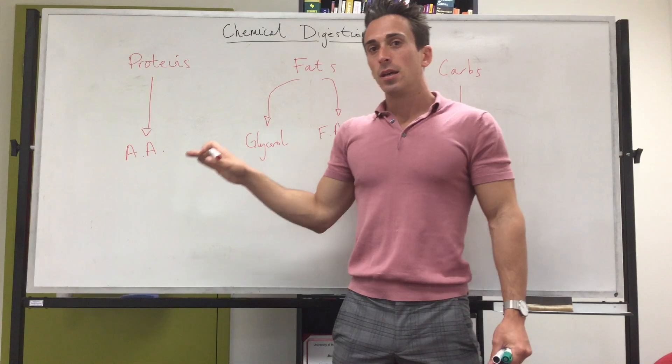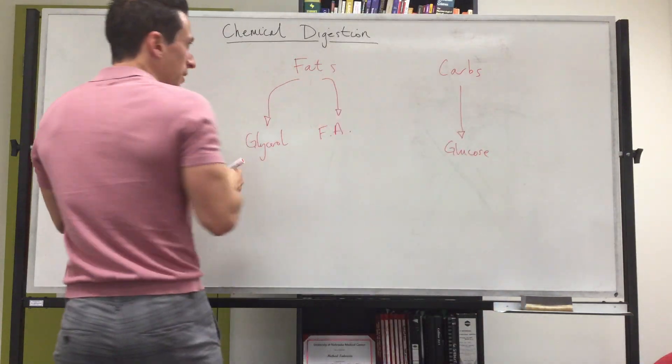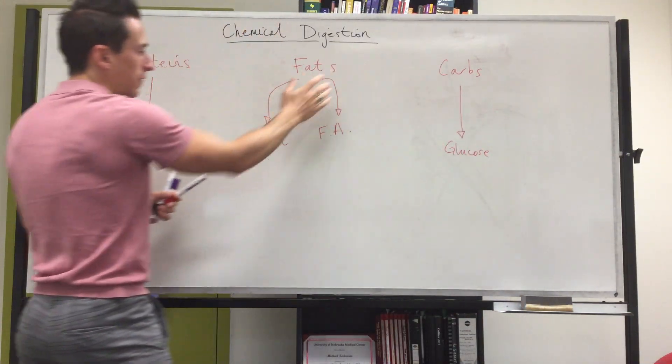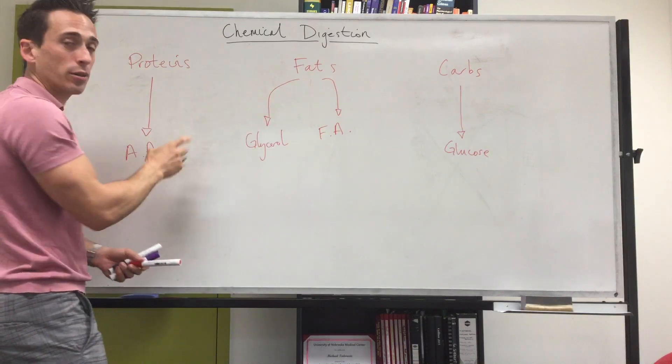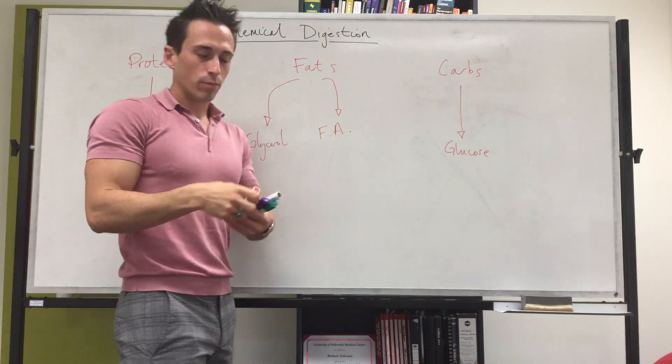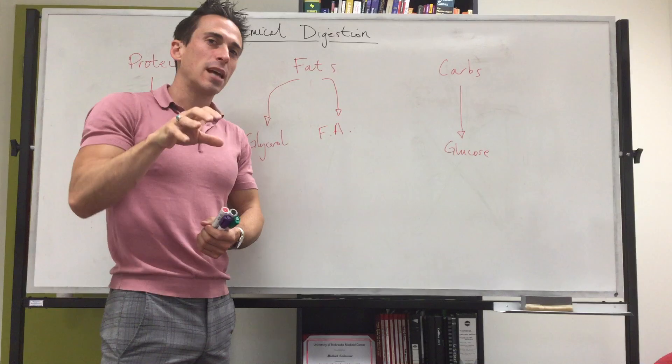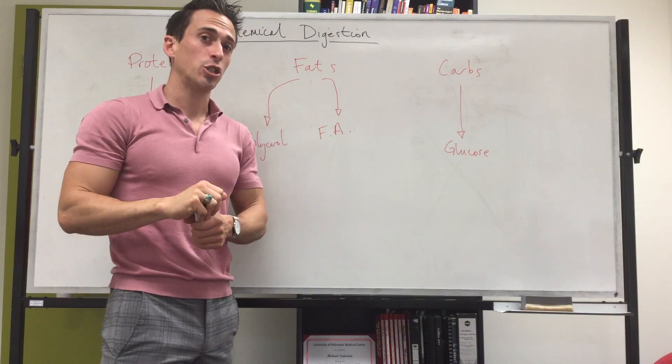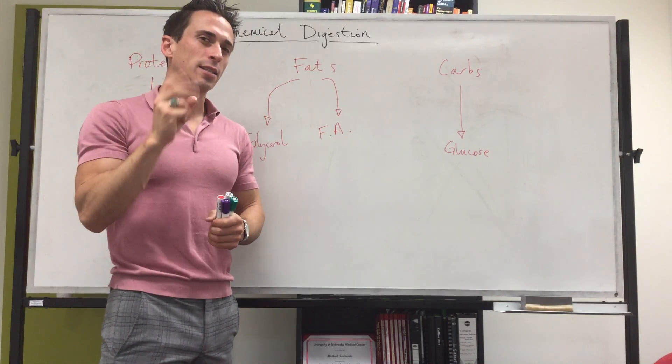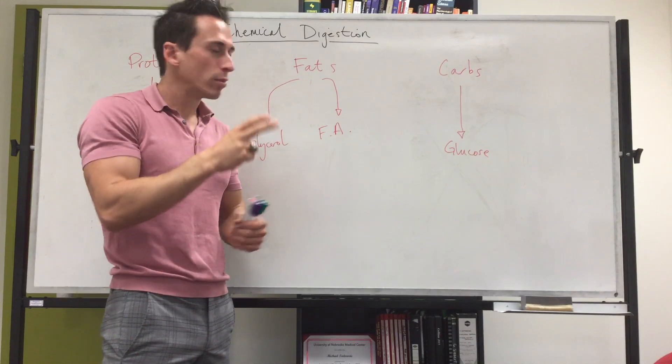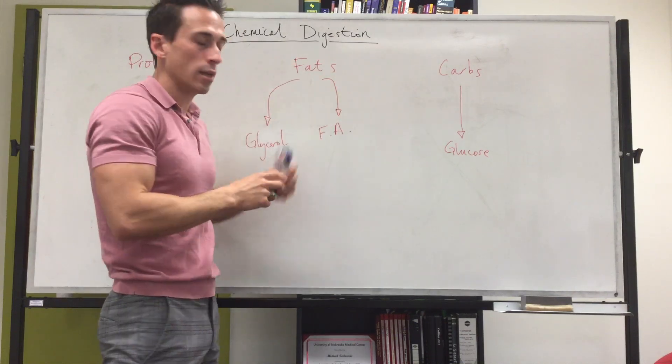Now the question is: how do we go from carbs to glucose, fats to glycerol and fatty acids, and proteins to amino acids? Well, today I want to talk about how this happens through chemical digestion—using those molecular scissors to chop them up so we can get them down into their smaller units.